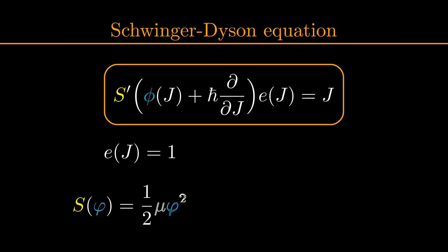Say we choose the action S equals one half times mu times phi squared again, the Schwinger-Dyson equation becomes phi equals j over mu. Note that if we set the source to zero, we get that the expectation value of a free field is zero, just as we have seen before.